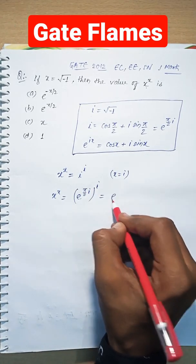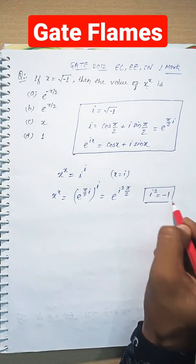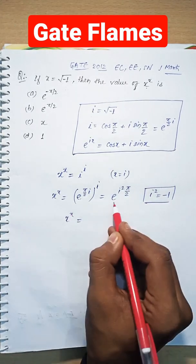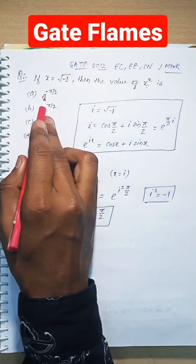Iota multiplied by iota is iota squared. So e to the power (iota squared)(π/2). Since iota squared is minus 1, x to the power x equals e to the power minus π/2. Therefore, option A is correct.